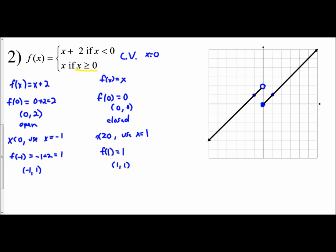Now we have the graph of the piecewise function: f of x equals x plus 2 for x less than 0 appears to the left of the y-axis, and f of x equals x for x greater than or equal to 0 appears to the right. This video examines how to use the critical value approach to graphing piecewise defined functions — look at the conditions and pick x values around those conditions.